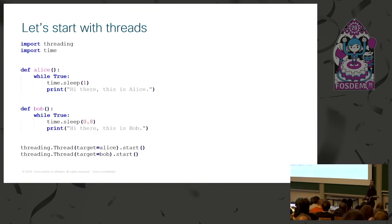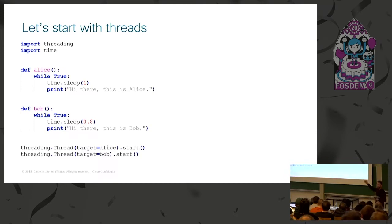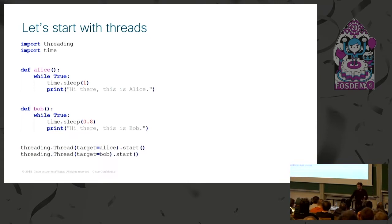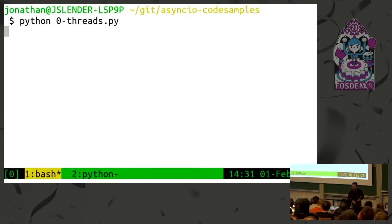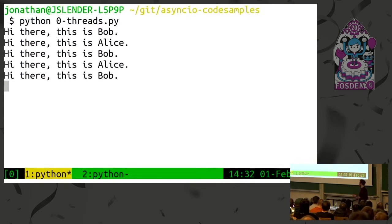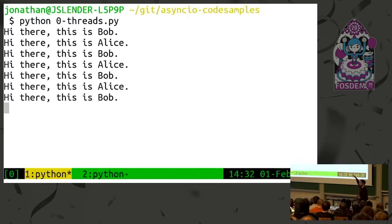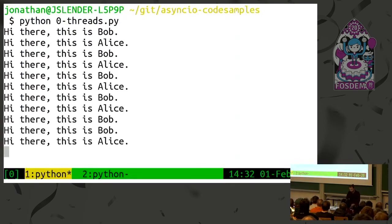Let's first start with threading. Threading is pretty easy. You define two functions — in this case Alice and Bob — and then you create two threads, where each time you specify a target: the first time target is Alice, the second time target is Bob, and you start them. If we execute this, you see these two things are running concurrently — both print statements are nicely interleaved.